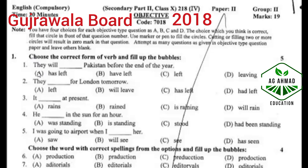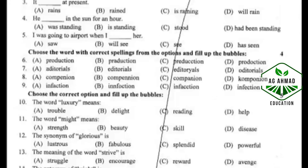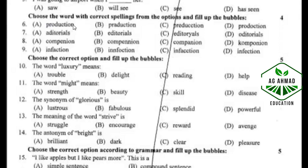Gujranwala Board Group 2. Take the correct form of verb. They will have left. B option: They will leave for London tomorrow. B option: It is raining at present. C option: He has been standing in the sun for an hour. D option: I was going to the airport when I saw her. A option. Take the correct spelling of the word 'production': P-R-O-D-U-C-T-I-O-N. A option. Editorial: E-D-I-T-O-R-I-A-L. B option. B for banana: companion: C-O-M-P-A-N-I-O-N. B option.